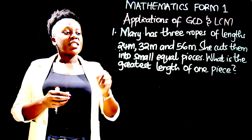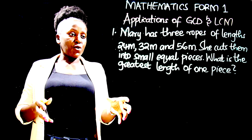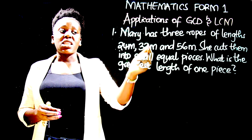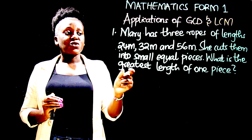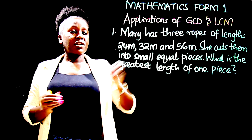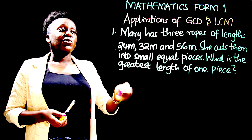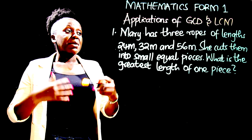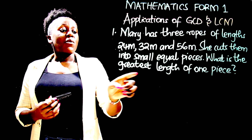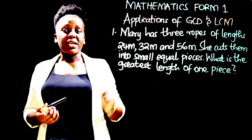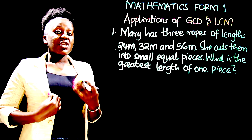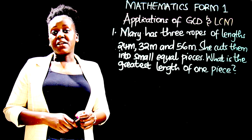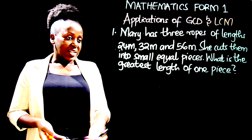So basically, we want to determine the length of a piece of rope — a length that is a division of 24, 32, and 56. Listen: division leads you to divisor. So basically, we are looking for the greatest common divisor. Another thing that can guide you to know whether you need to determine the GCD or the LCM is the word 'greatest', from the greatest common divisor. So using any of the three methods we have learnt, we will determine the GCD of 24, 32, and 56. We can use the ladder method.